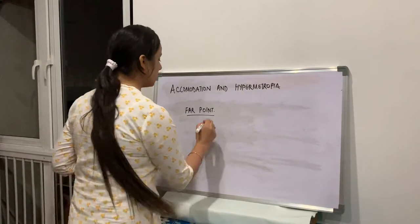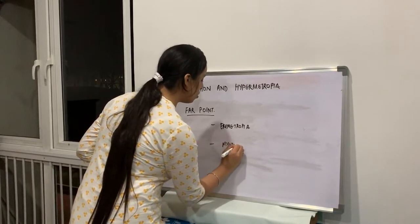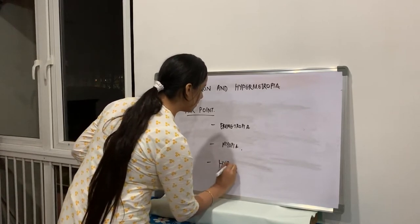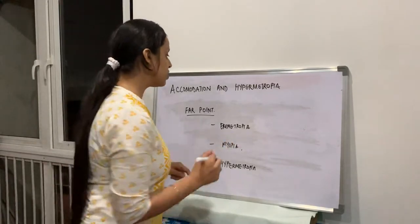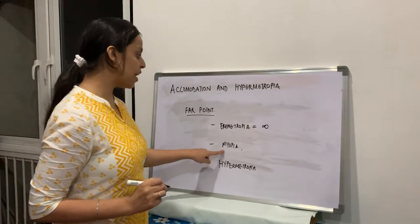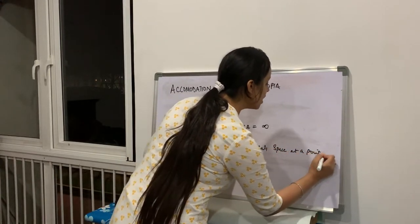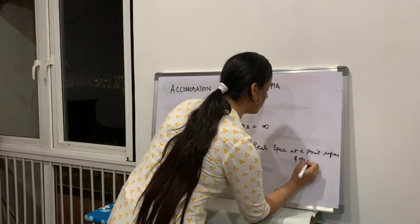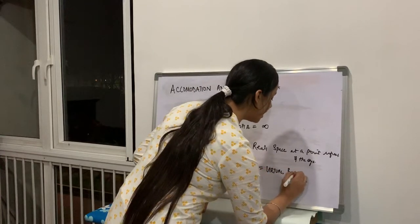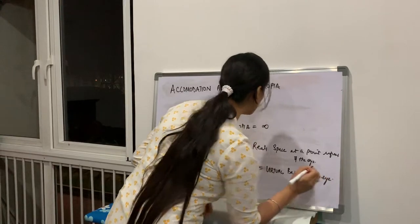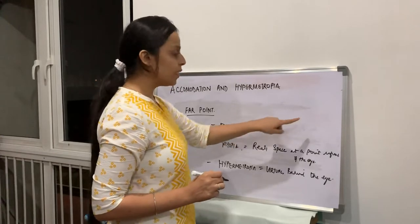We can have three conditions: emmetropia, myopia, or hypermetropia. The Farpoint in emmetropia is at infinity. The Farpoint in myopia is a real point located in space in front of the eye.